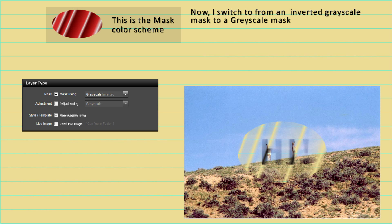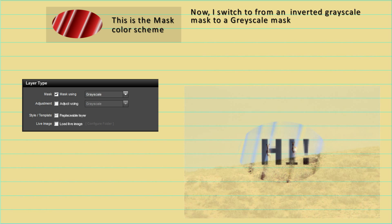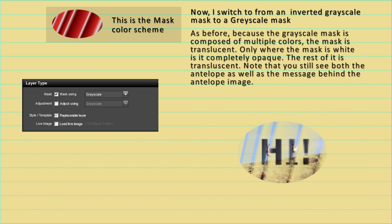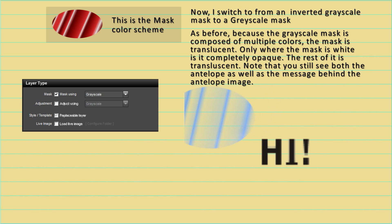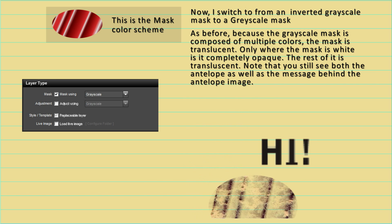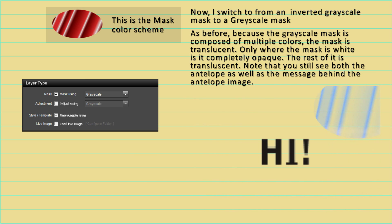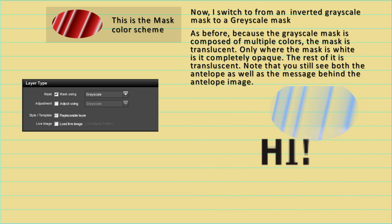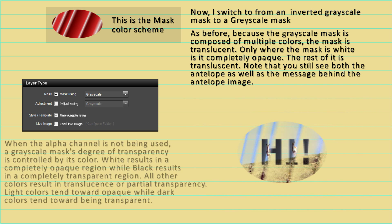Now I'm going to go to a grayscale mask. Since the mask itself is composed of multiple colors, the result of the mask is going to be translucent. Only where the mask is completely white will you fully see the image that is being masked. Everything else is going to be translucent, meaning you'll see both the layer that's being masked and what's below that layer.